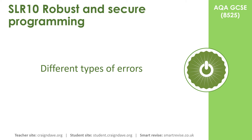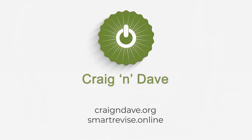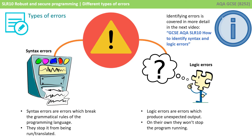In this video, we take a look at the importance of being able to identify simple errors in an algorithm and then suggesting fixes. There are two main types of errors you need to be able to identify at GCSE, and they are syntax errors and logic errors.